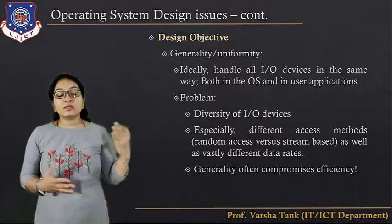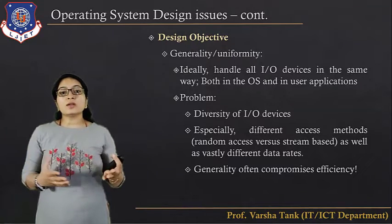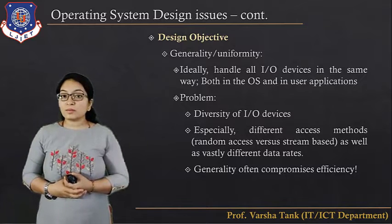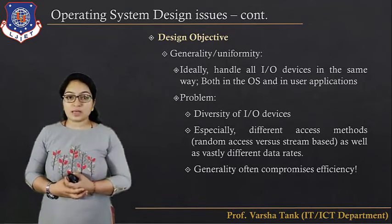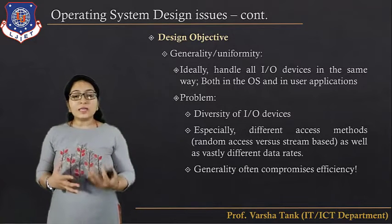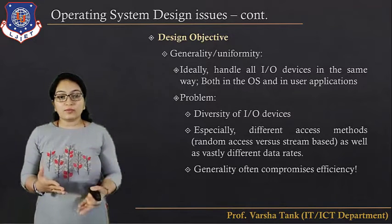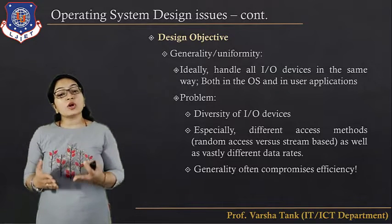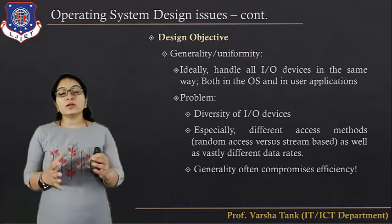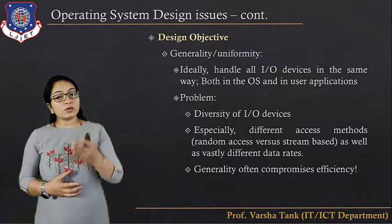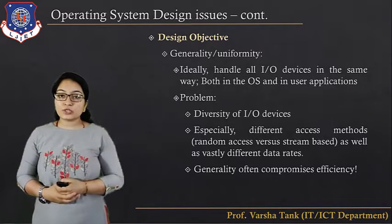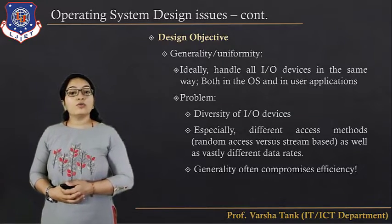For example, in remote procedure communication, the server is at one end and the user is at the other end. This shows the diversity of IO devices, with different access methods such as random access versus stream-based methods, and vastly different data rates. Each IO device cannot use the same method for data transfer. Generality often compromises efficiency. These are the two design issues: efficiency and generality.